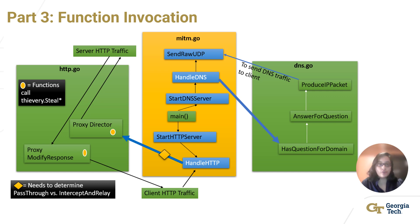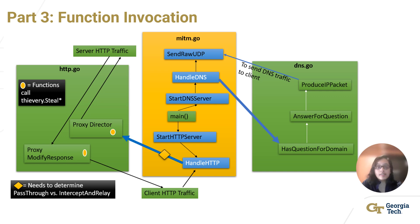To understand the function invocation, let's start with MITM go. The main function needs to start two critical processes: the DNS server and the HTTP server. Inside the start DNS server, the handle DNS function is responsible for handling DNS packets. It should start with calls to has_question_for_domain, answer_for_question, and produce_IP_packet. Finally, it should call send_raw_UDP to send the spoofed DNS response to the client. In DNS go, the produce_IP_packet function returns the bytes of an IP packet with the specified IPv4, UDP, and DNS layer details, handling serialization and checksums — so you don't need to modify it.